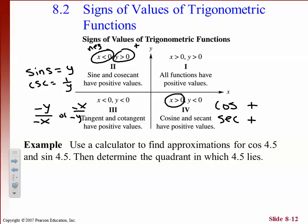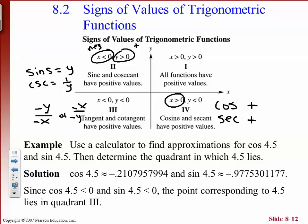Example: use a calculator to find approximations for cosine of 4.5 and sine of 4.5, then determine which quadrant it lies in. Make sure your calculator is in radian mode. Sine of 4.5 is approximately negative 0.21 and cosine is also negative. When both sine and cosine are negative, that only happens in quadrant 3. You use the same logic — where is sine positive, where is cosine positive — to determine the quadrant.